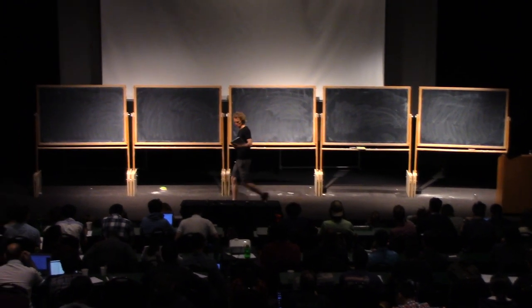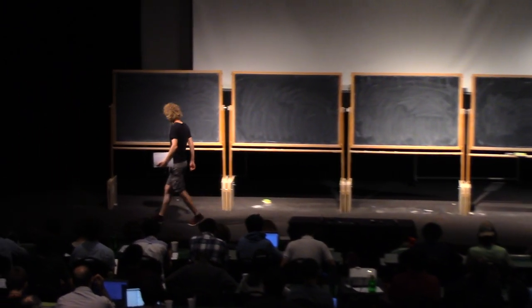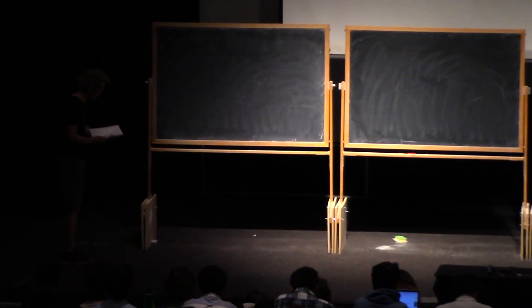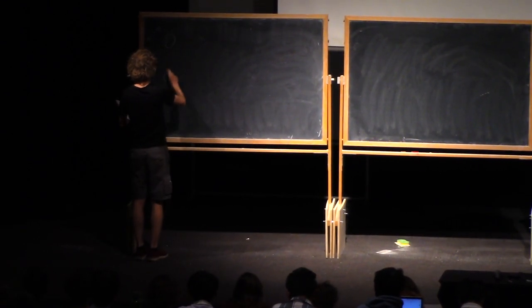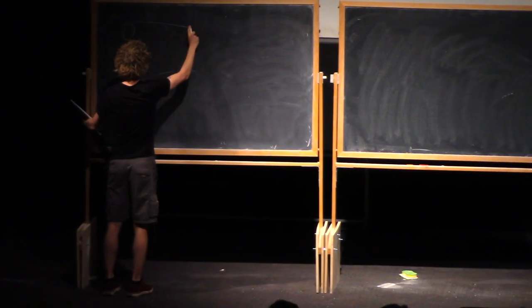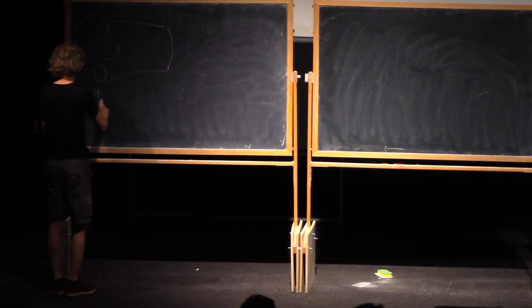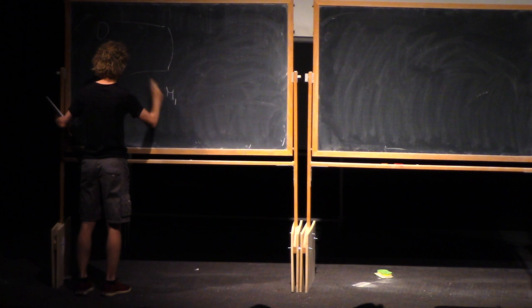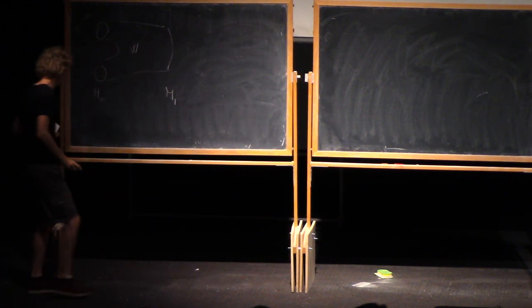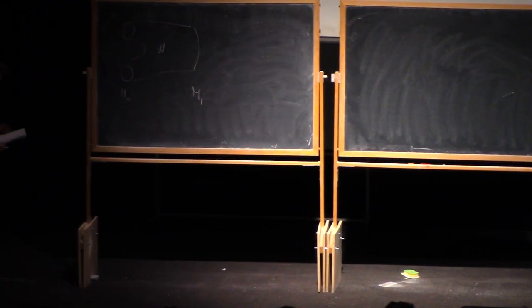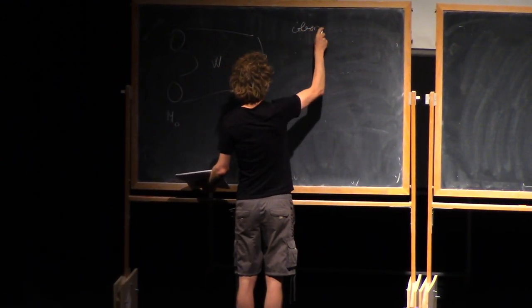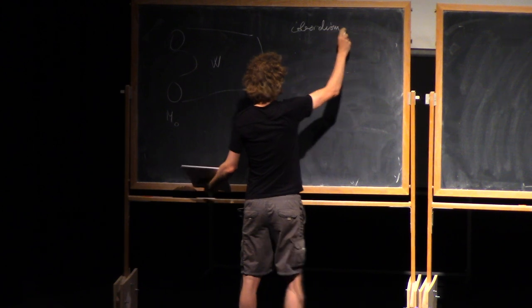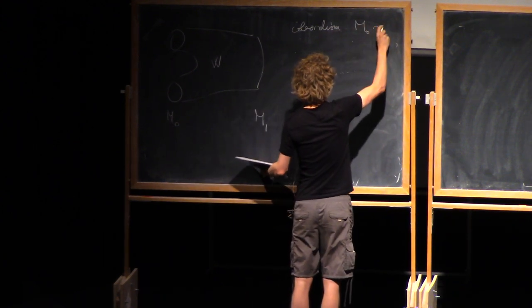Let's start from the definitions. I think cobordisms have been mentioned earlier in this summer school, but let me just tell you what I mean. This is the usual picture - there's an incoming and an outgoing boundary, and then the cobordism itself. So just to emphasize what's part of the data, a cobordism from M0 to M1.